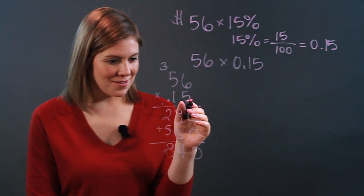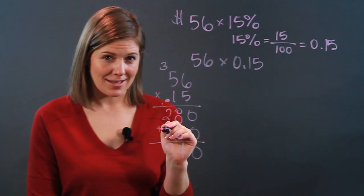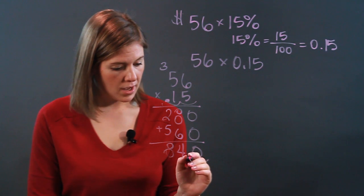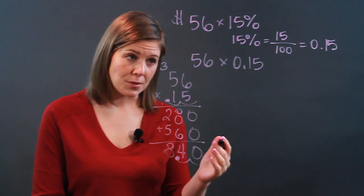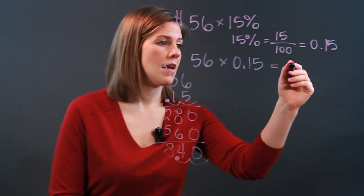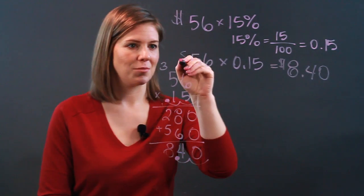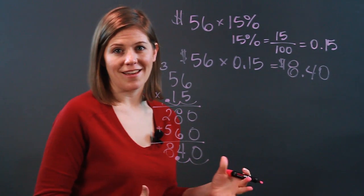We have to get back to the fact that there was a decimal right here. And that decimal needs to be reflected in the answer. That decimal was one, two place values in. And so we will put one, two place values in. There will be a decimal. So actually, those $56 shoes are $8.40 off. We're dealing with dollars. Put our units in. That's how we can multiply by a percentage.